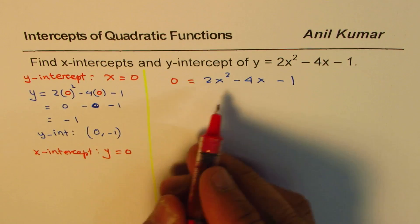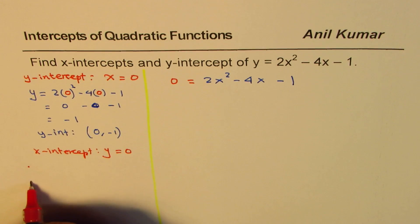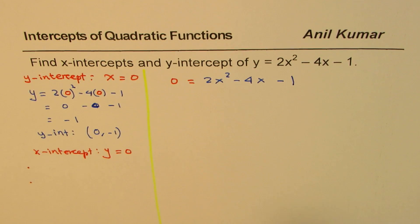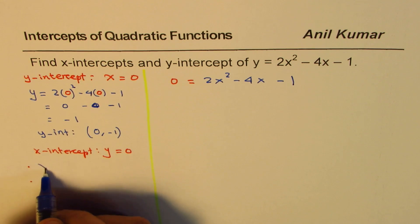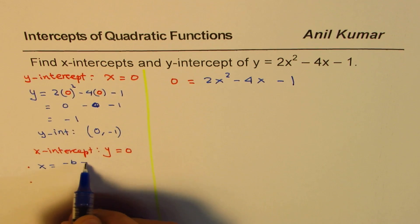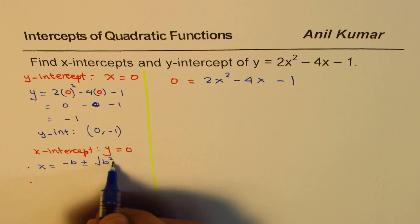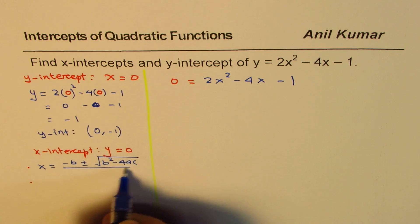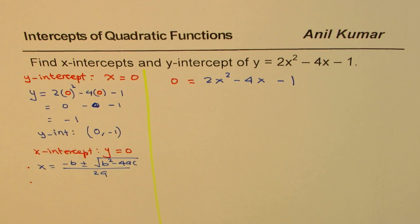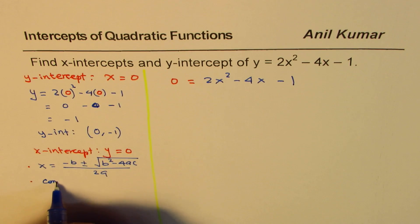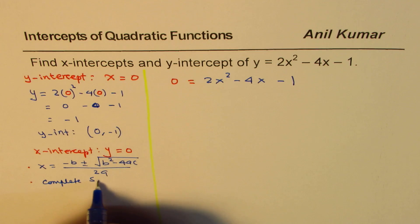Now this standard equation could be solved in different ways. One method is to use quadratic formula which is x equals minus b plus minus square root of b squared minus 4ac divided by 2a. You could do that. The other method is complete the squares and then find it.